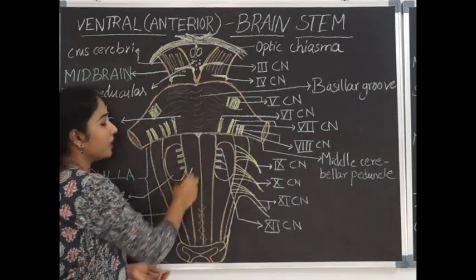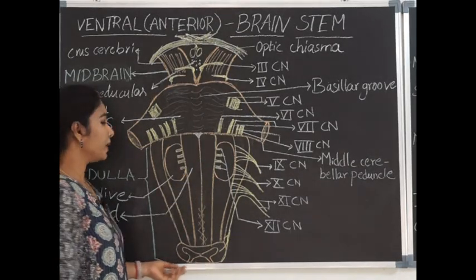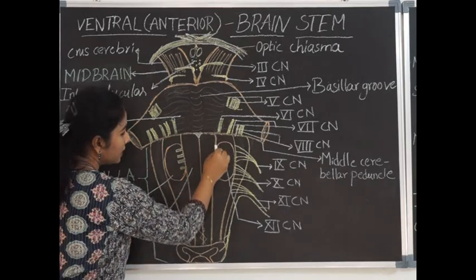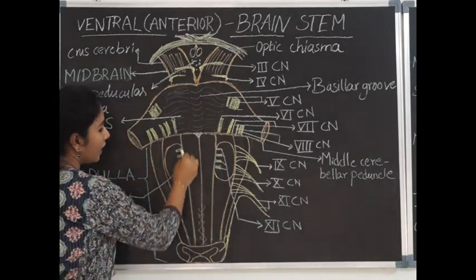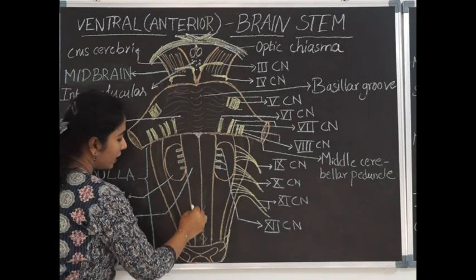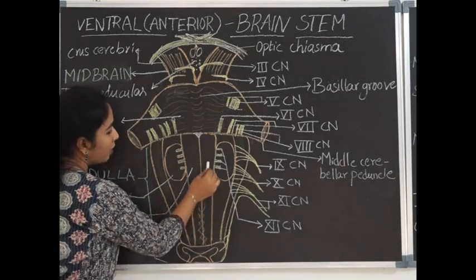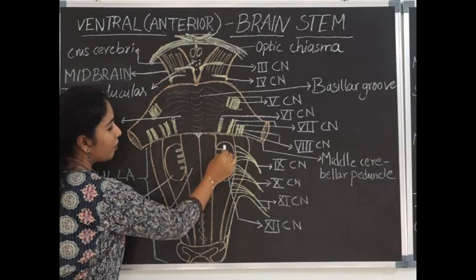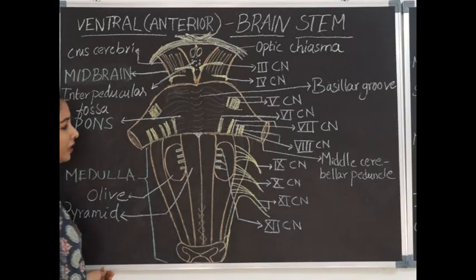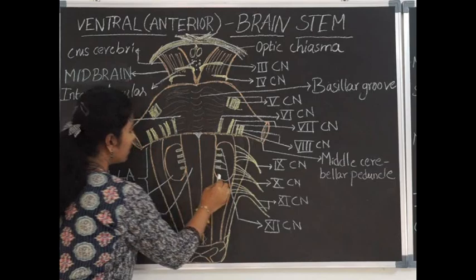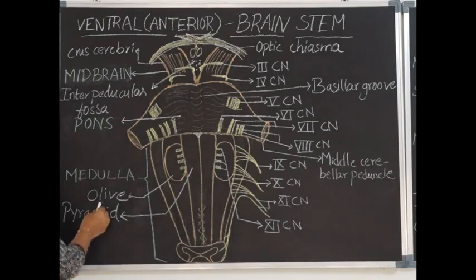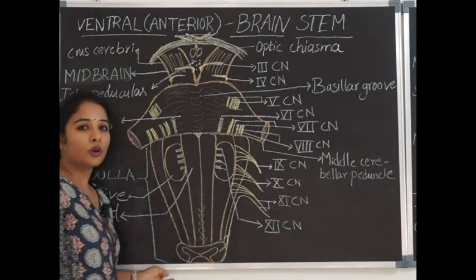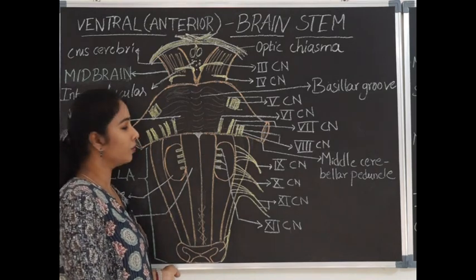Deep to the pyramids, there are tracts called pyramidal tracts. Lateral to the pyramids, there is a sulcus called the anterolateral sulcus, which separates the pyramid from an oval-like elevation present in the upper one-third of medulla oblongata. This oval-like elevation is called the olive. Deep to the olive, there is a nucleus called the inferior olivary nucleus.